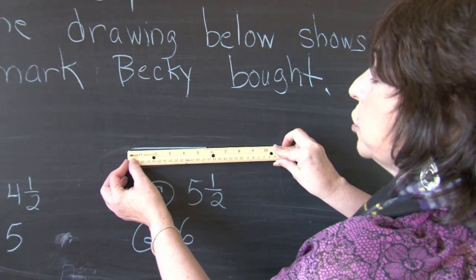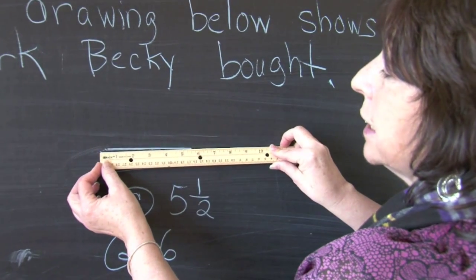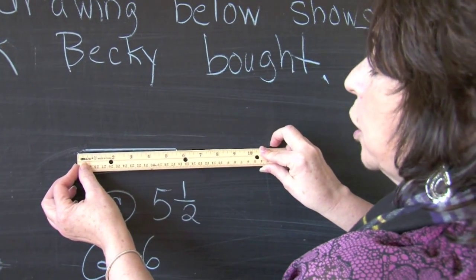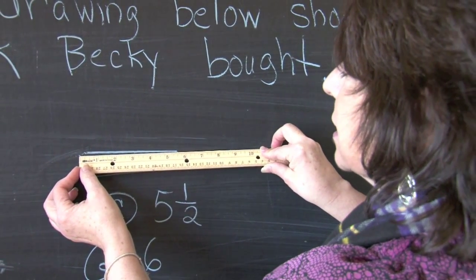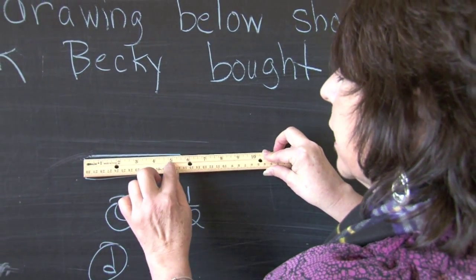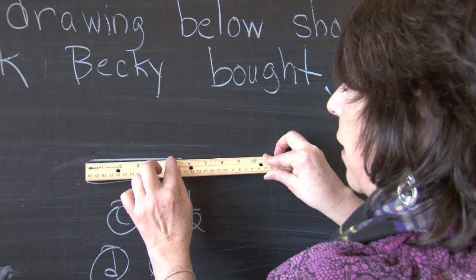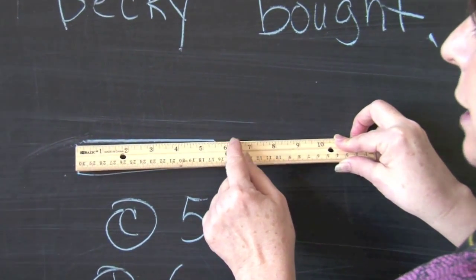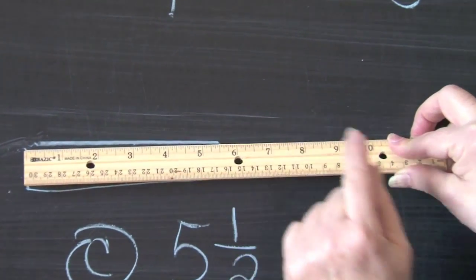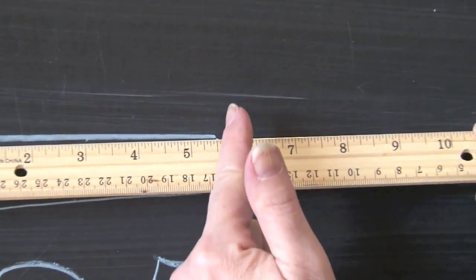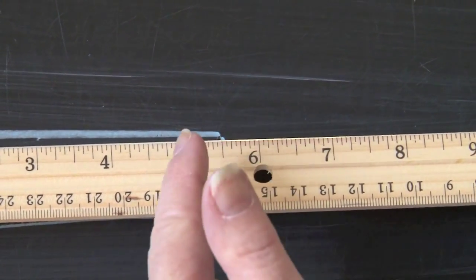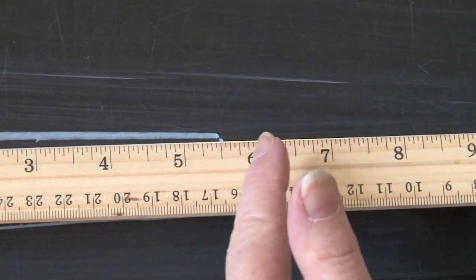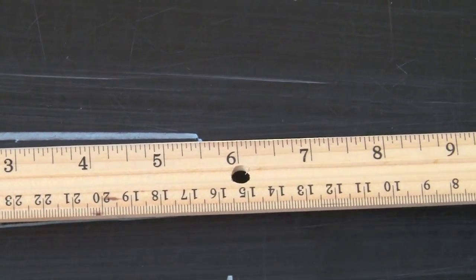You must start at zero to get a true and accurate measurement. When you start at zero, you will see that it is not exactly five and it is also not six. It falls right in between the five and the six.